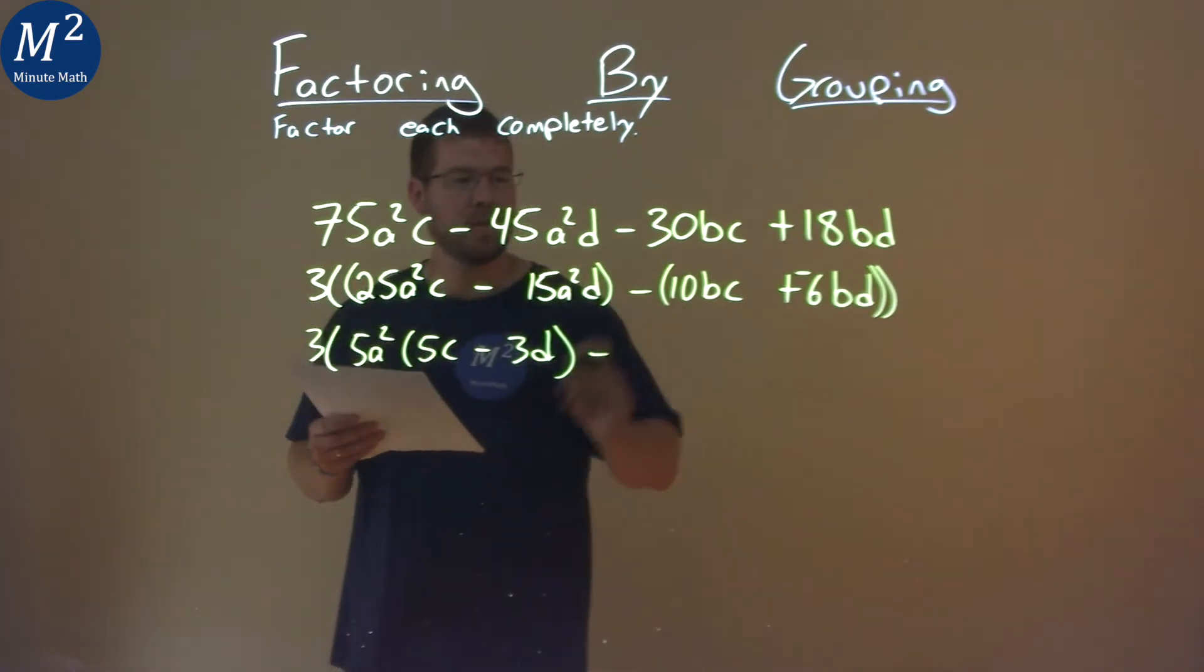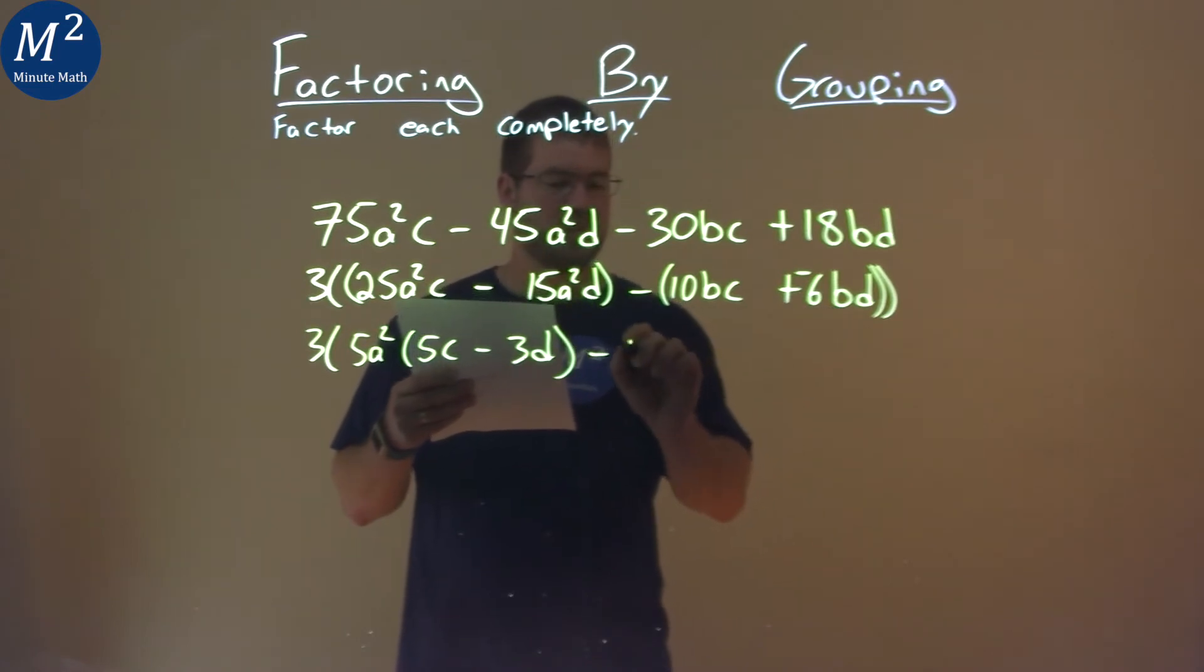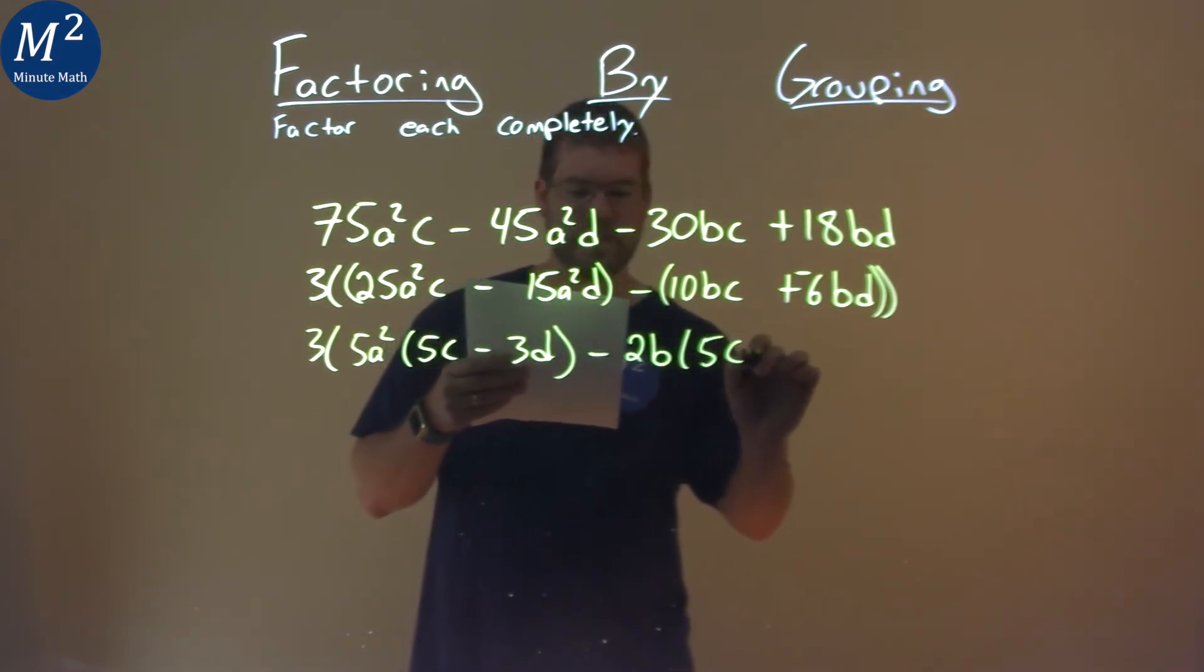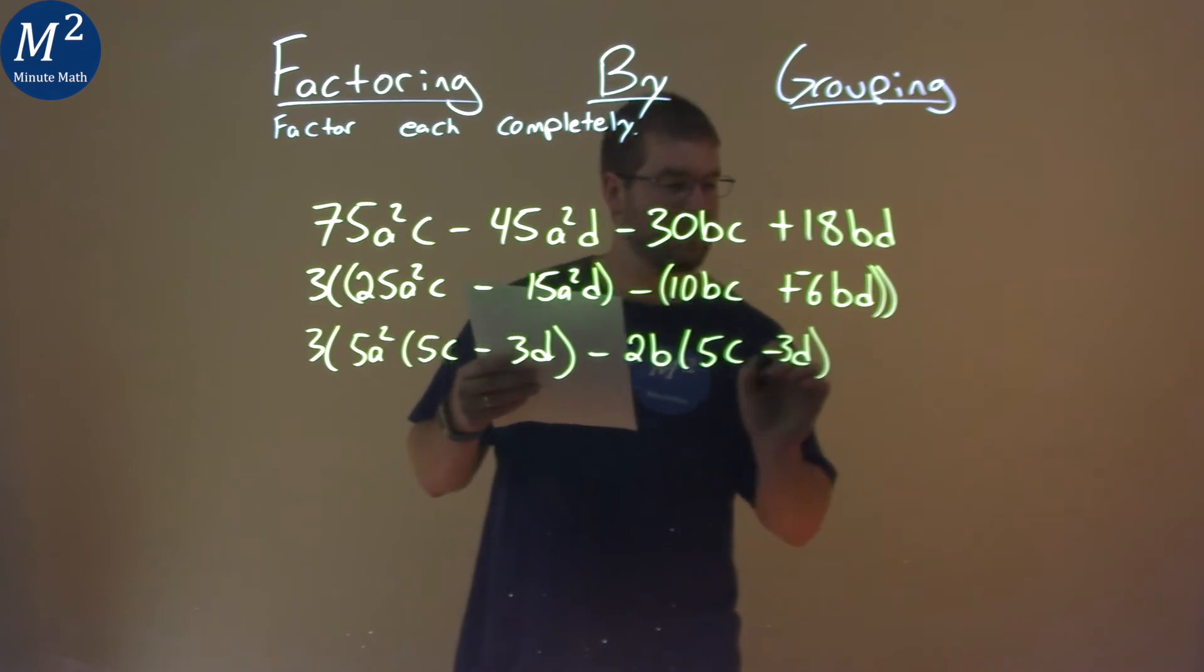Do the same thing with the second two parts here. 2b goes into both parts. So if I pull out 2b, I'm left with 5c - 3d.